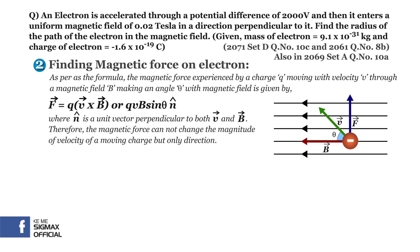This means that the magnetic force on a moving charge is always perpendicular to its velocity and magnetic field. Therefore, the magnetic force cannot change the magnitude of velocity of moving charge but only direction. That is, this magnetic force acts as radial centripetal force. Now let's put the value of Q, v, B and theta in the above equation and find the magnitude of magnetic force.